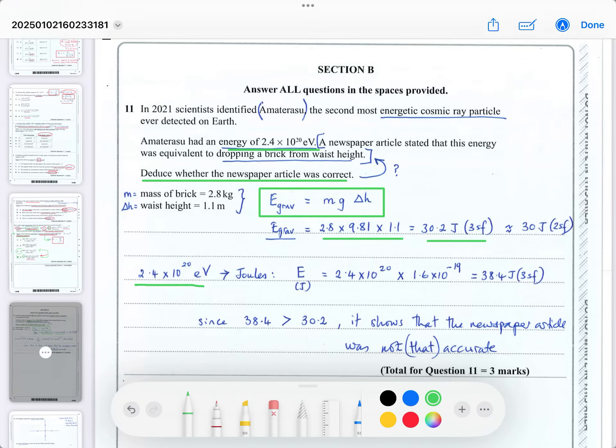2.4 times 10 to the 20 electron volts in joules means you've got to multiply the number of volts, in this case 2.4 times 10 to the 20, by the electron charge, and that gives you 38.4 joules to three significant figures. So since 38.4 is greater than 30.2, it shows that the newspaper article was not that accurate. It's not outside the ballpark, they're both around 30, between 30 and 40, but in fact, the energy of the cosmic ray particle is greater than the energy released by dropping a brick from your waist height. That's taking into consideration these estimates. So maybe if the brick was larger, then it would be a fair comparison. They just want to see that you know how to use the conversion of energy.